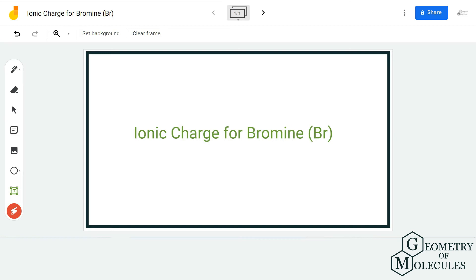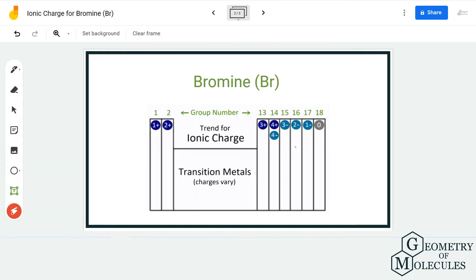Hi guys, welcome back to our channel. In today's video, we are going to help you determine the ionic charge for bromine atom. It's quite easy when you look at the periodic table. You just need to find out which group it belongs to to know the ionic charge.